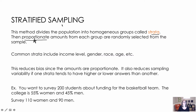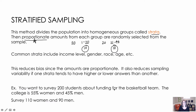I would assign the 20 males digits from 1 to 20 and choose 10 of those randomly using a random number generator. The 20 females get numbers from 21 to 40, and I choose 10 of those as well. That way I'm assured of having 10 males and 10 females. As another example, if I want to survey 200 students about funding for the basketball team and the college is 55% women and 45% men, I would take 110 women and 90 men to keep the same proportions.